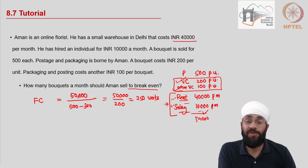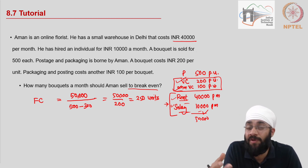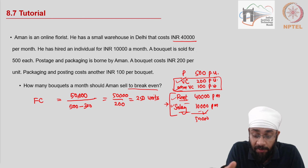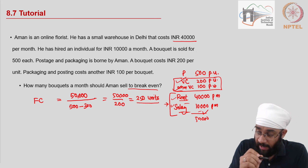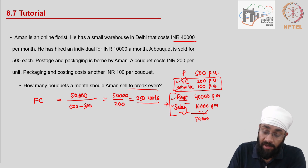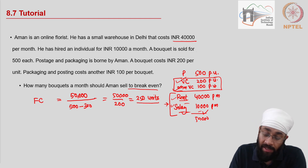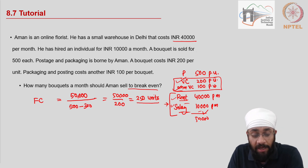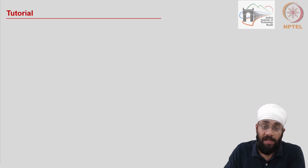If you had more information on the daily rate of sales, you could figure out in how many days he would break even. In this case we worked on a monthly basis — if you have yearly costs, you can calculate the yearly break-even point. Likewise, you can break down any time period, identify fixed costs, and figure out the break-even point. That's it, see you in the next video.